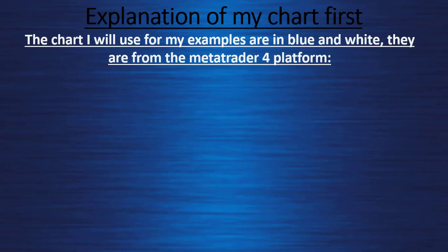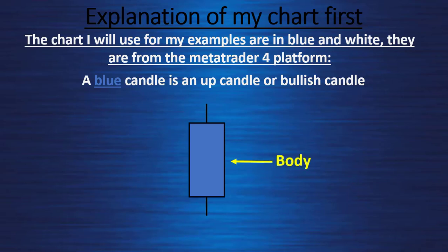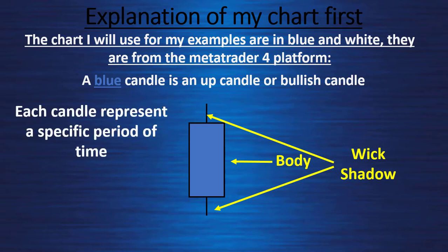Before we see some examples, let me explain how my chart works. The charts I will use for my examples are in blue and white — they are from the MetaTrader 4 platform. A blue candle is an up candle or bullish candle. In this candle we have two parts: a body and a wick or shadow. The body defines the entry point and the exit point, since each candle defines a specific period of time — like 1 minute, 5 minutes, 15 minutes, 1 hour, 4 hours, 1 day, 1 week — depending on the time frame you choose.